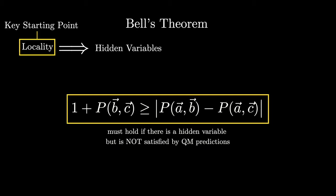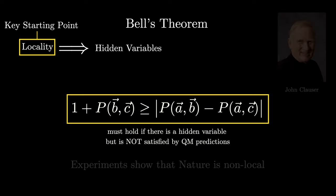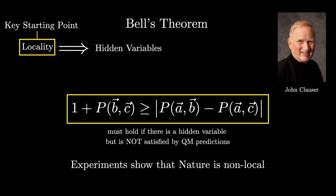The measurement of one particle really does affect the distant particle, no matter how far away it is. And in 1972, a physicist named John Clauser was able to successfully carry out the first experimental test of this inequality. He found that the inequalities were indeed violated. So, the physics of our universe is non-local. Spooky action at a distance truly occurs in nature, as Einstein so famously rejected.